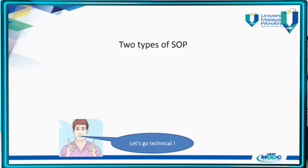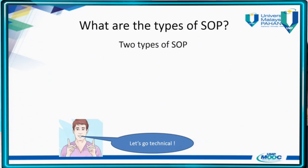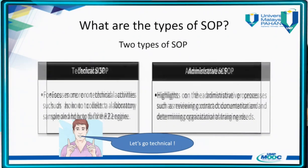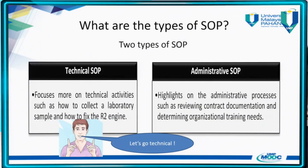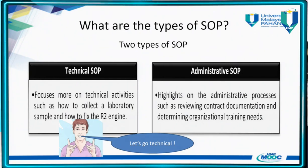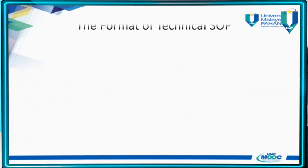There are two types of SOP. One is a technical SOP, which focuses on technical activities — things like how to collect samples from the lab or how to fix an engine. There is also an administrative SOP, which focuses on documentation and administrative processes. We are obviously focusing on the technical SOP.